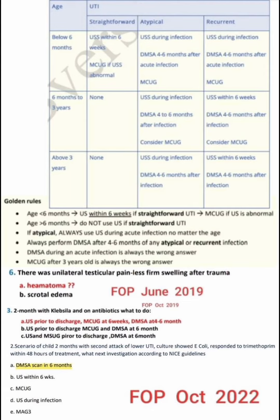When age is above 3 years with straightforward UTI, nothing is needed. For atypical UTI above 3 years, first we do the ultrasound during infection, then DMSA 4 to 6 months after infection. For recurrent UTI above 3 years, we do the ultrasound within 6 weeks, then DMSA 4 to 6 months after infection.